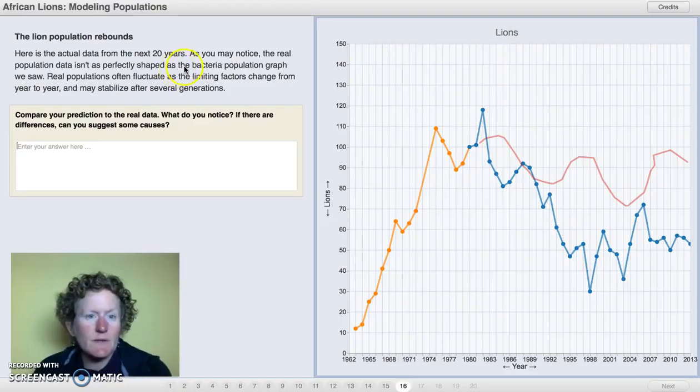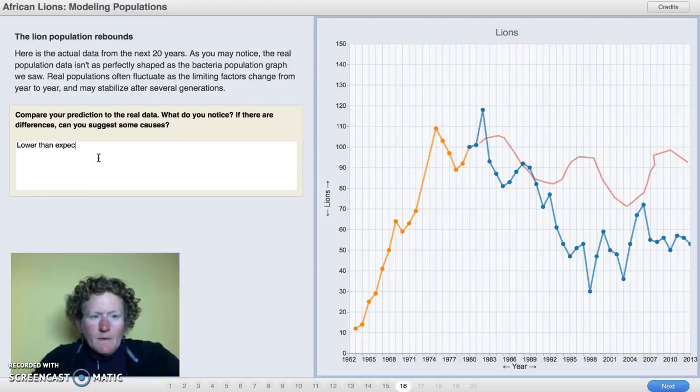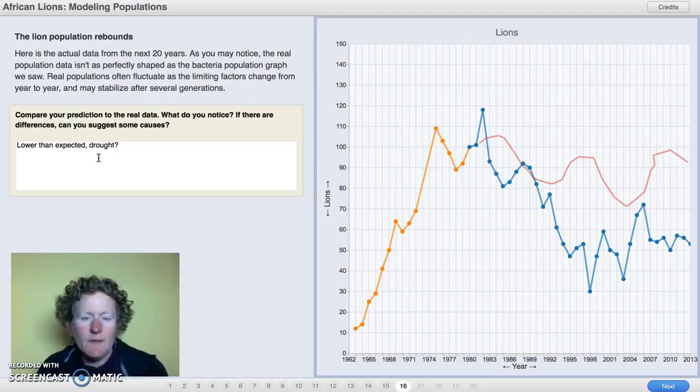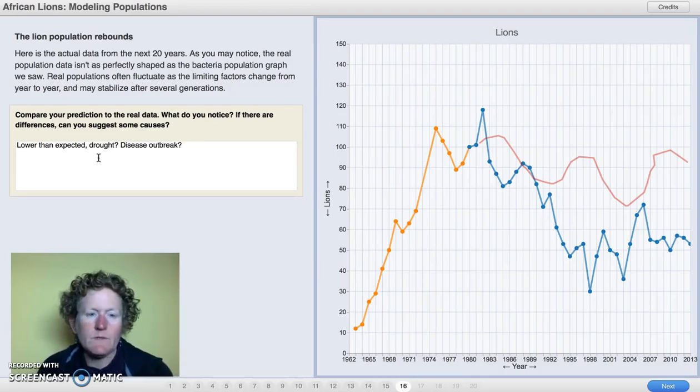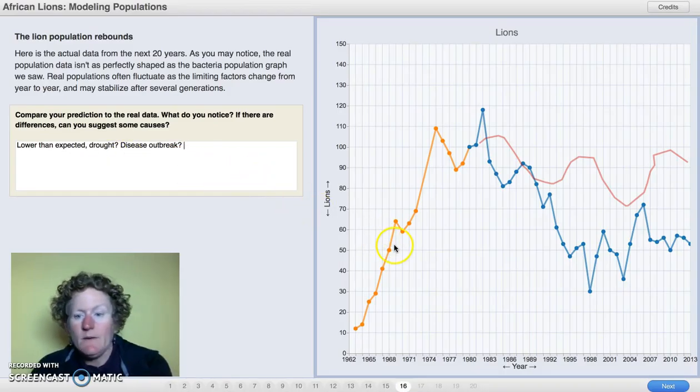Here's the actual data from the next 20 years. As you may notice, the real population data isn't as perfectly shaped as the bacterial population growth we saw. Real populations often fluctuate as the limiting factors change from year to year and may stabilize after several generations. Wow, it kind of sank a little bit more. I wonder what caused the decline here. Compare my prediction to the real data. What did I notice? Are there differences? Can I suggest some causes? Well, it's a little bit lower. Maybe drought had affected the crater, or maybe there was another disease outbreak. Or maybe there were some lion poachers that came in and took a bunch of lions.